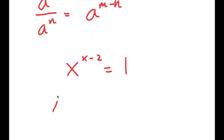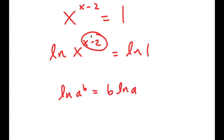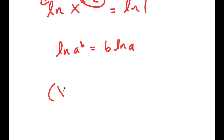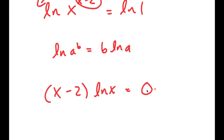From here, I'm going to take the ln on both sides. So I get ln of x to the power of x minus 2 is equal to ln of 1. Using the property ln of a to the power of b equals b times ln a, I can move x minus 2 to the front, and I get x minus 2 times ln x is equal to ln of 1, which is 0.